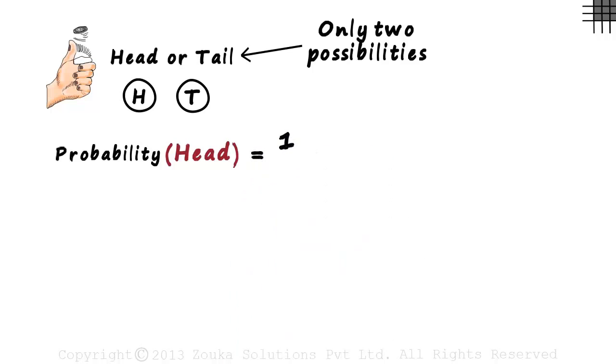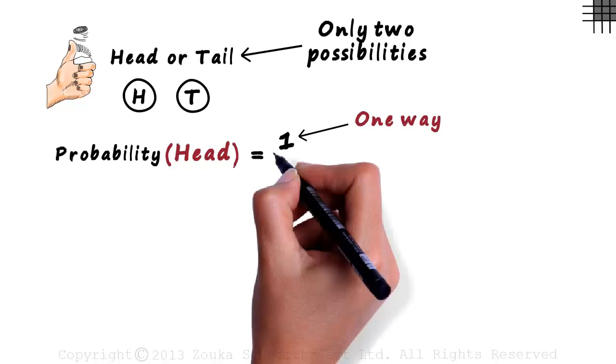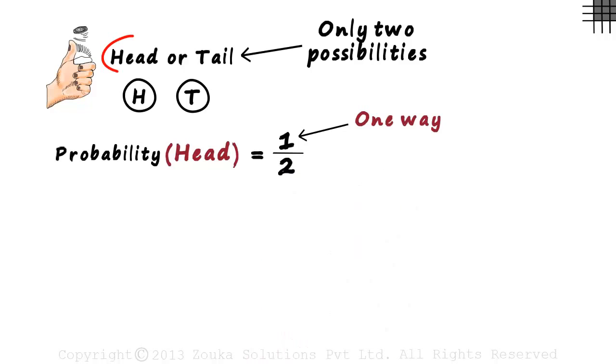There is only one way in which you can get a head. The only way is if it lands a head. That's the first thing we had to find out to find this probability. The second thing we need to find out is the total number of possibilities. In total, there are only two possibilities, a head or a tail.